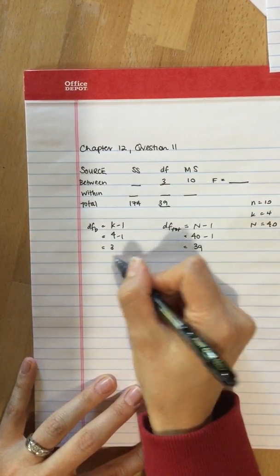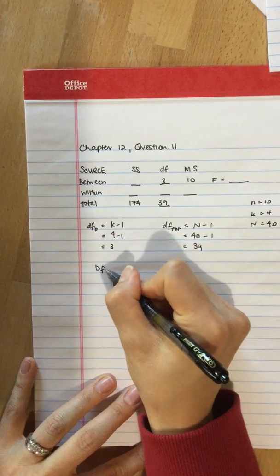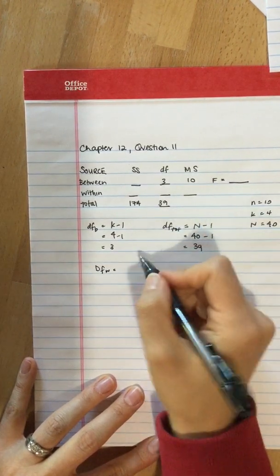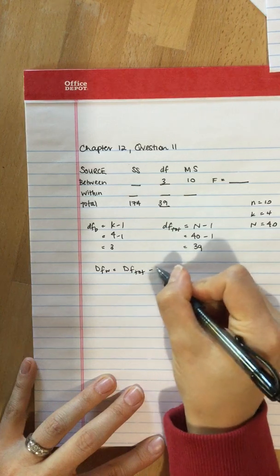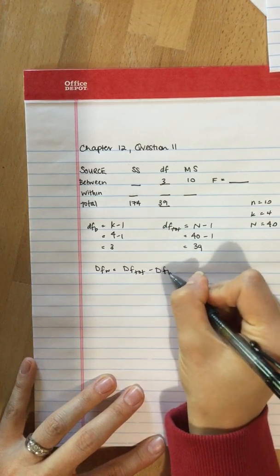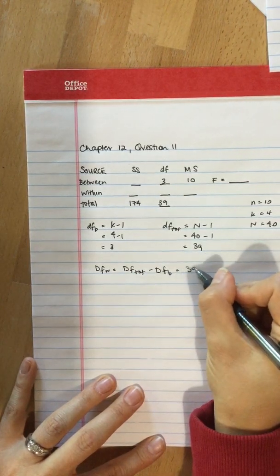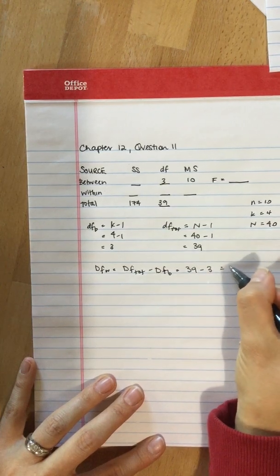And then degrees of freedom within is equal to degrees of freedom total subtract degrees of freedom between. So that's 39 minus 3, which is 36.